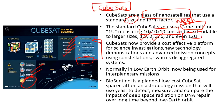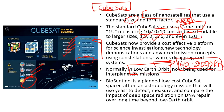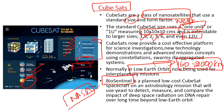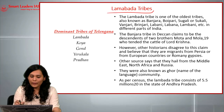Cube satellites are normally placed in low earth orbit, which spans from 160 kilometers to 2000 kilometers from the surface of Earth. Currently functioning cube satellites are placed at about 400 kilometers. This topic was in the news because of NASA's cube satellite called BioSentinel — a low-cost mission designed to study deep space radiation technology using yeast.